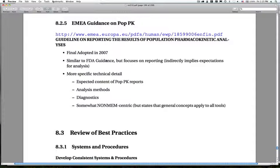Another one for you to read is the EMEA guidance. And this came out more recently, finally adopted in 2007. And they've taken a slightly different tact in that this guidance is focused on reporting the results. So, it's similar to the FDA guidance, but this focus on reporting is what's been used. However, by requesting certain elements to be included in the report indirectly has some implications on what you have to do for the analysis. So, it's a bit more specific technical detail than the FDA guidance.